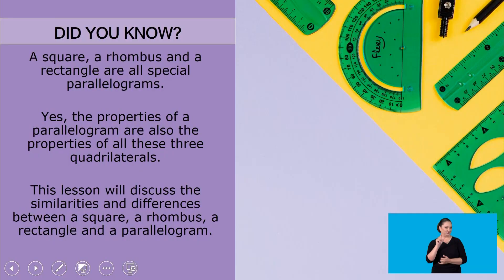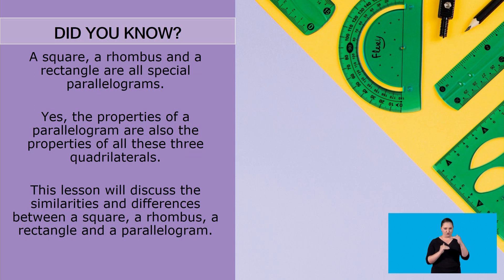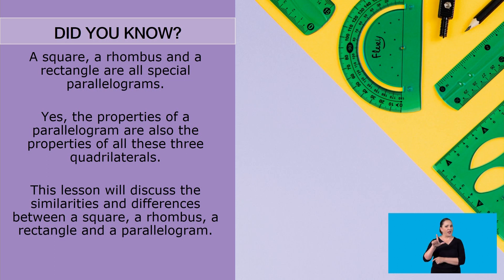Hello Learners and welcome to today's lesson of Geometry of 2D Shapes: Parallelograms. Let's start off our lesson with an interesting fact. Did you know that a square, a rhombus and a rectangle are all special parallelograms? Yes, the properties of a parallelogram are also the properties of all these three quadrilaterals.